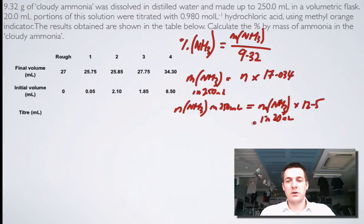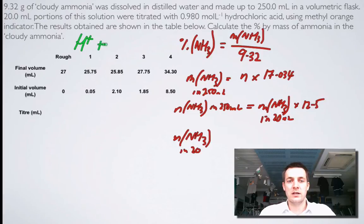What's the number of moles of ammonia in 20 mL? Well, I'm finding that out by reacting it with hydrochloric acid. So there's a reaction going on. It's between the H+ ions in the hydrochloric acid and the ammonia to make ammonium ions. And we can see here that it's a one-to-one reaction.